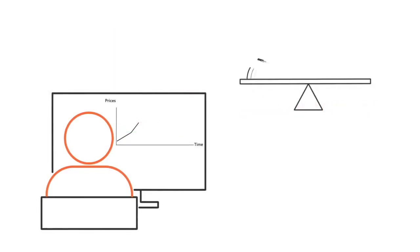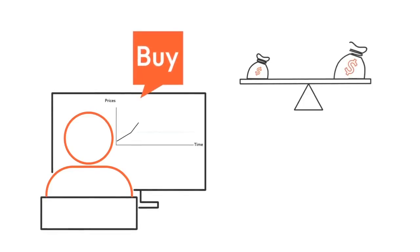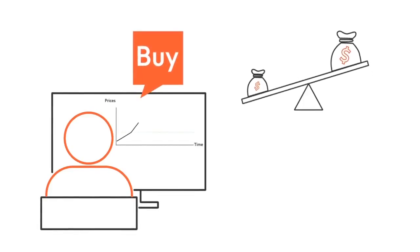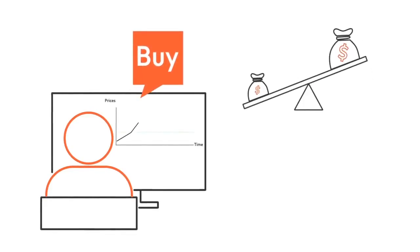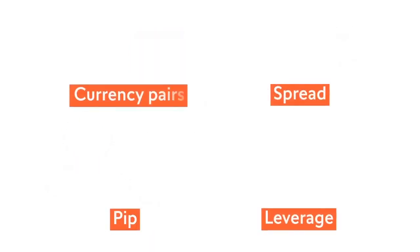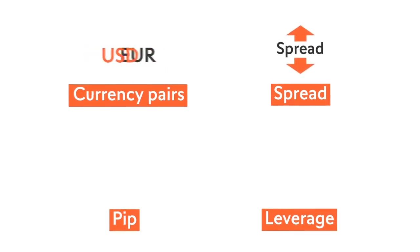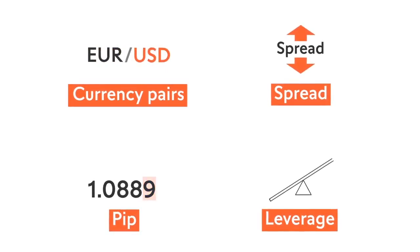To achieve this result, traders often use margin accounts to leverage or borrow money that enables them to make such large market orders. This concludes the overview of how to trade Forex, what a currency pair is, definitions of spread and pip, and why Forex market participants use leverage.